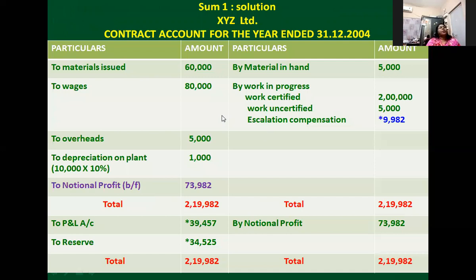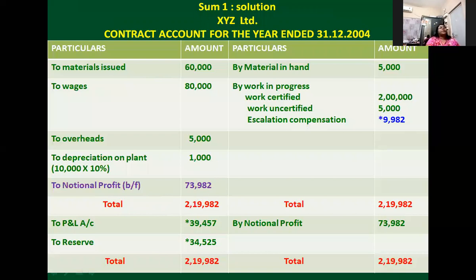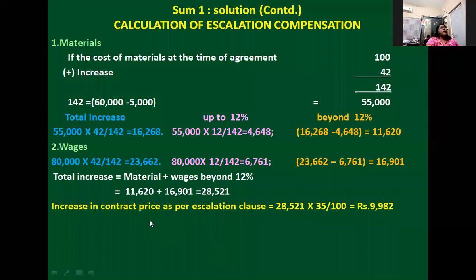Now look back at your contract account. For escalation clause problems, in work in progress we must show: work certified, work uncertified, and escalation compensation. Adding the value 9,982 — what is the notional profit? It is a balancing figure on the debit side for the incomplete contract. The profit is always termed as notional profit. So 73,982 — since the contract is nearing completion but still incomplete, whatever profit we are getting under this contract is termed as notional profit.